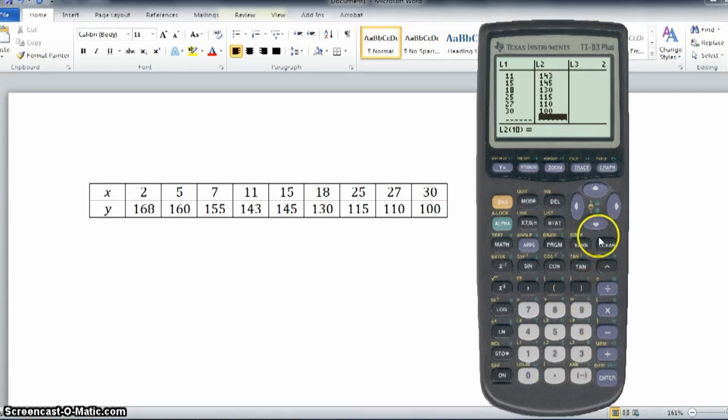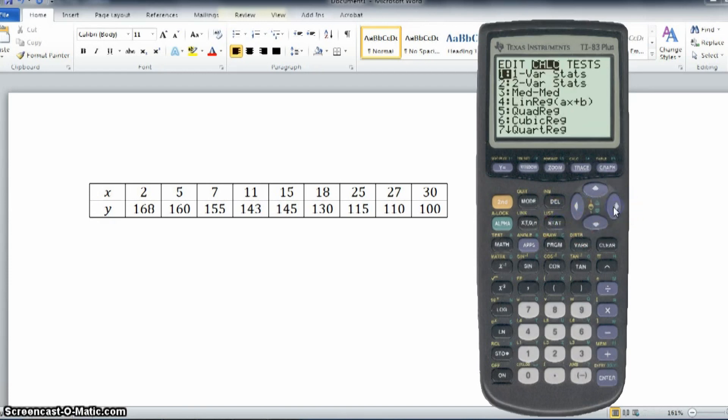Now, we want to go into stat, and then to calculate. We're not going to go to the one variable stats, and what I want to make sure that you avoid is to not use linreg ax plus b. We want it in the form of a plus bx. So, you've got to go down to linreg a plus bx. This is the one you want, number eight.